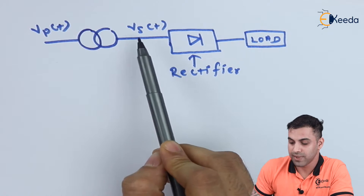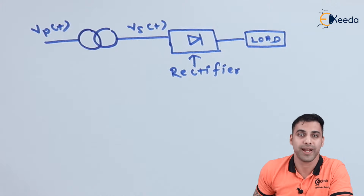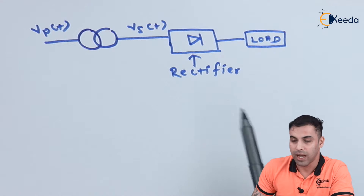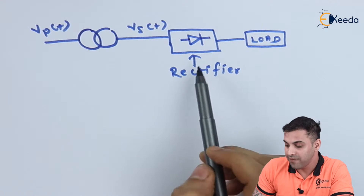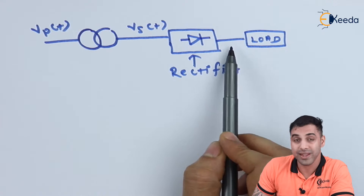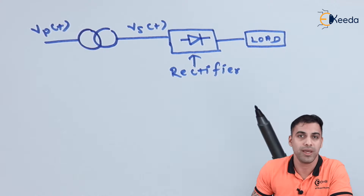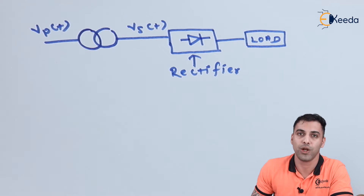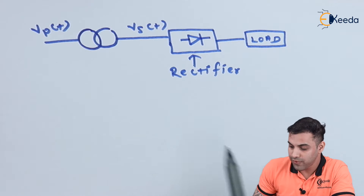Let V_S(t) be the input AC voltage to a rectifier. This is the symbolic representation of a rectifier. After rectification, the output voltage is applied to the load. The load may be either R, R-L, or R-L-C — whichever is appropriate for the application.